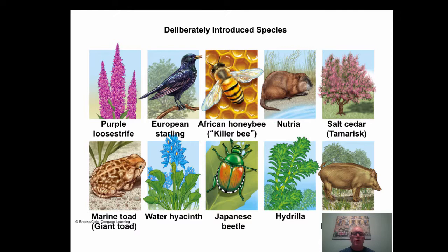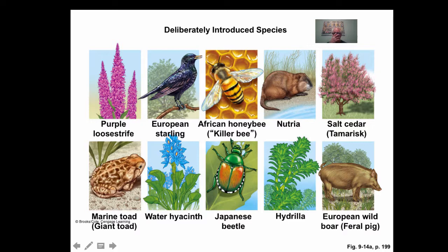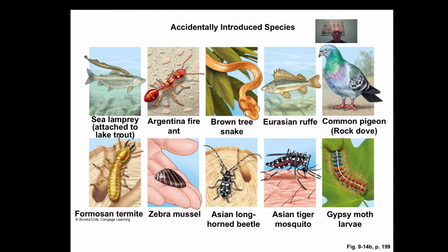Here are some species we deliberately introduced for one reason or another. The purple loosestrife in the Great Lakes area is causing a lot of problems because they can't seem to get rid of it. Here are also some species accidentally introduced. The zebra mussel was actually a free response question a few years back. They come in the ballast water of ships - the water the ship uses to keep itself upright. The zebra mussels attached themselves and got into new areas because of that.